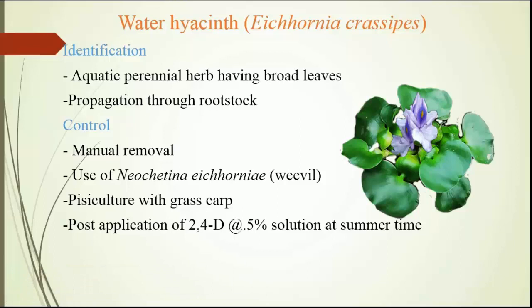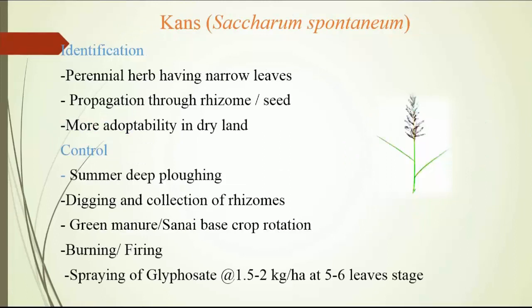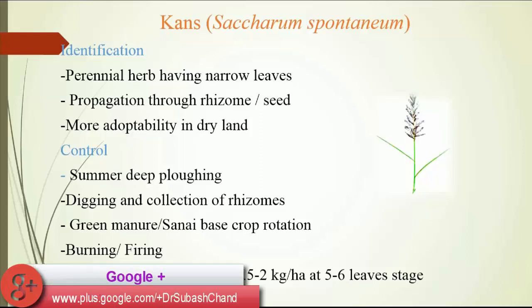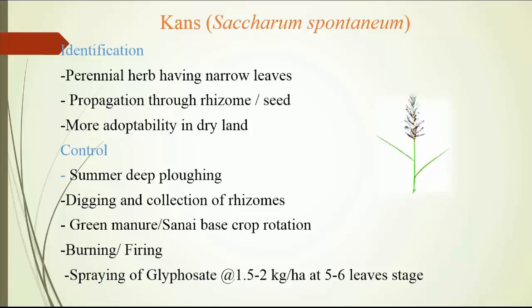Next is kans, also known as Saccharum spontaneum. Identification: kans looks like a perennial herb having narrow leaf, propagation through rhizome and seed, more adaptability in dry land. Control should be adapted by summer deep plowing, digging and collection of rhizome, green manure-based crop rotation, burning or firing in case of non-cropped area, and spraying of glyphosate at the rate of 2 kg per hectare at 5 to 6 leaf stage.